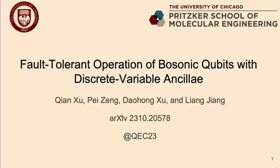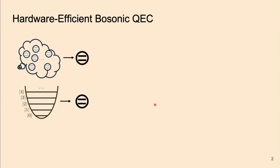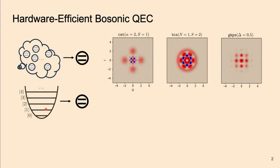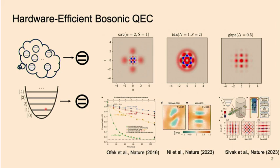We have the arXiv number, so please check it out if you are interested. To give a brief motivation: bosonic codes provide a highly efficient way of doing quantum error correction by leveraging the infinite-dimensional Hilbert space of a single bosonic mode. Robust quantum memories beyond the break-even point have been experimentally demonstrated for various bosonic codes, including the cat codes, the binomial codes, and the GKP codes.